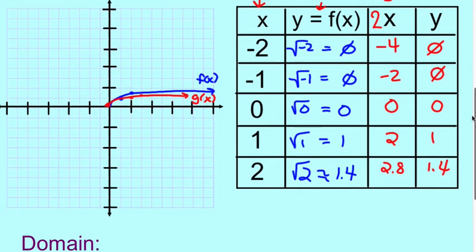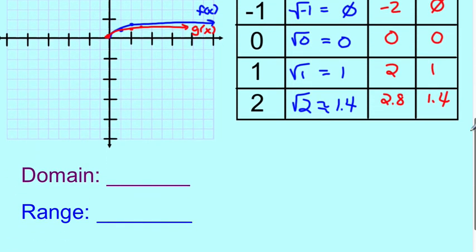Now, let's talk about the domain and range. For the domain, remember, domain works on your x-axis. So x equals 0 here. Everything to the right of that line exists. So we say, then, x is greater than or equal to 0.